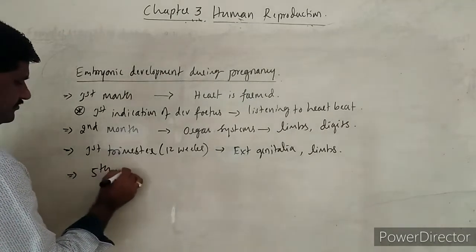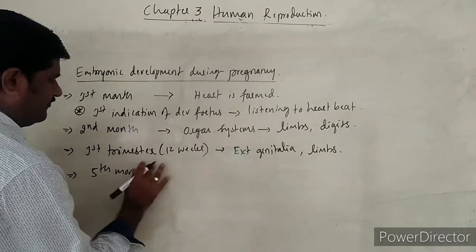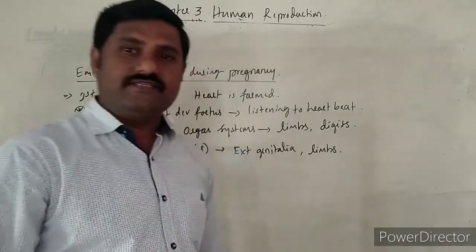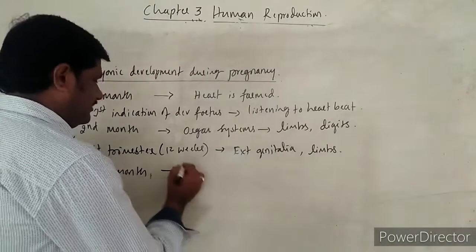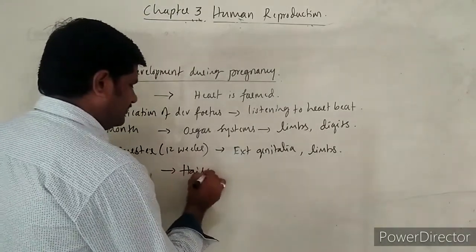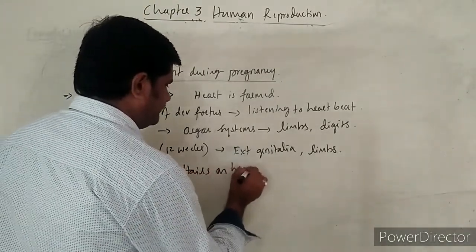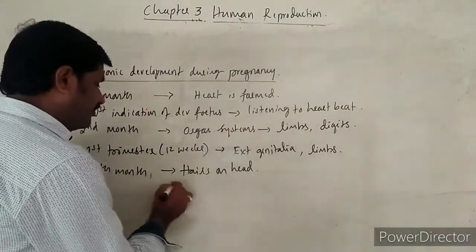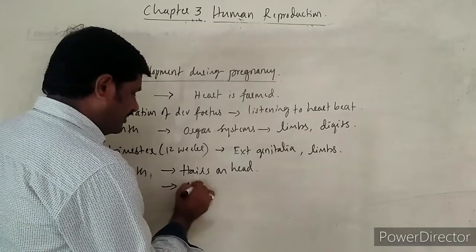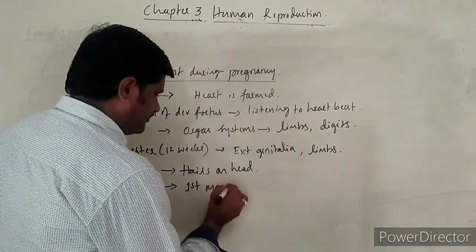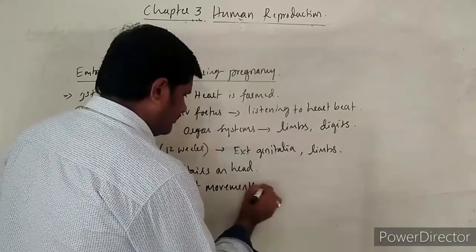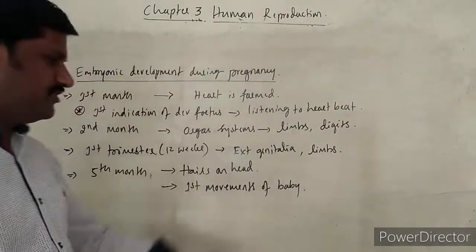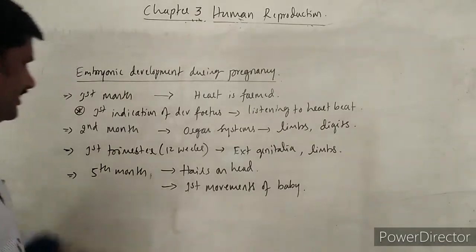In the fifth month, hairs on the head are easily observed. Also, the first movements of the baby in the womb of the mother are noticed during the fifth month.